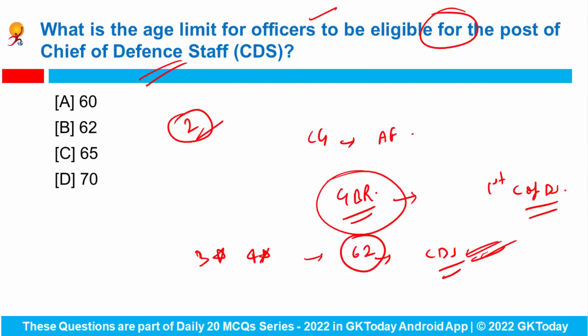three-star or four-star officers from the three services who want to come to the CDS post should be 62 years old. They will also be considered for the last two years. CDS is the most senior uniformed officer rank. The only four-star officers in the country are the CDS and the chiefs of the Tri-Services. So the age limit is 62 years.